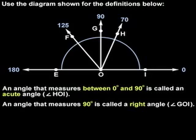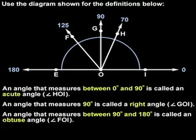An angle that measures 90 degrees is called a right angle. So we can see that angle GOI is a right angle. An angle that measures between 90 and 180 degrees is called an obtuse angle.